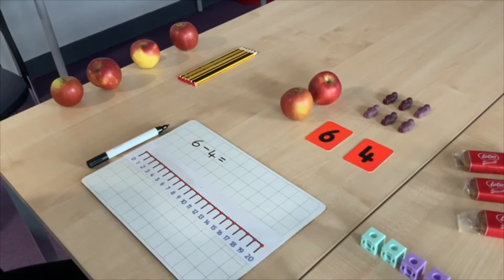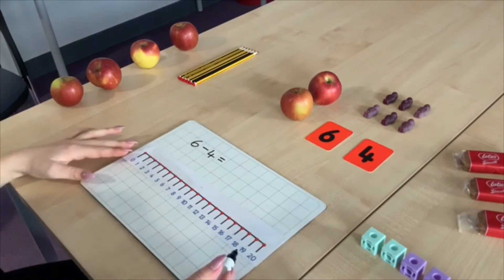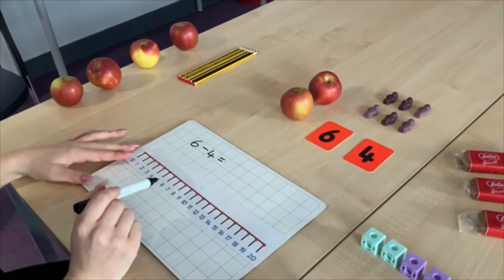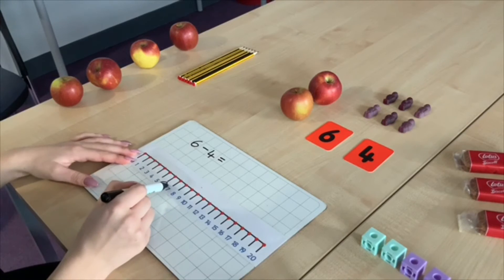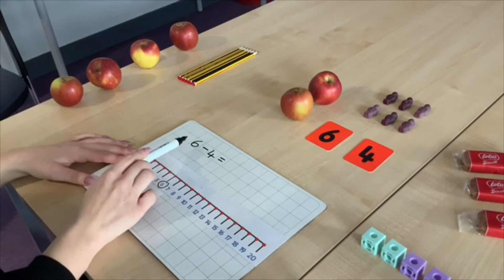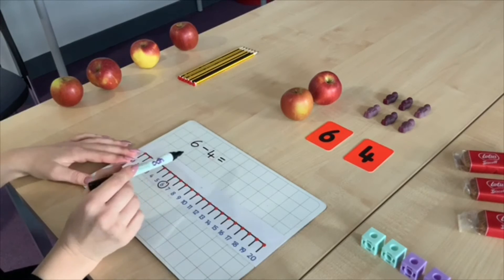Once children are secure with the concept of subtraction, we can move on to using a number line. So the same applies. We start with our biggest number, which is six, and we jump backwards because it's six take away four equals.